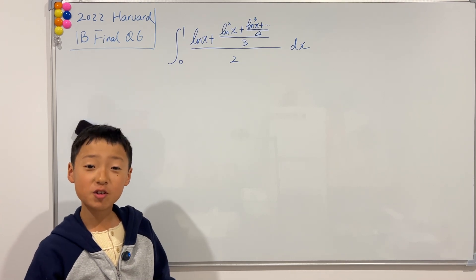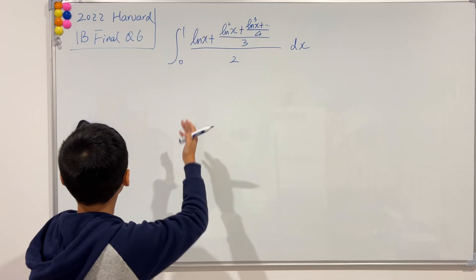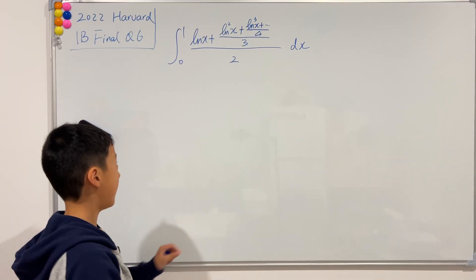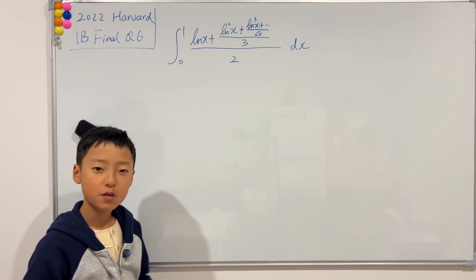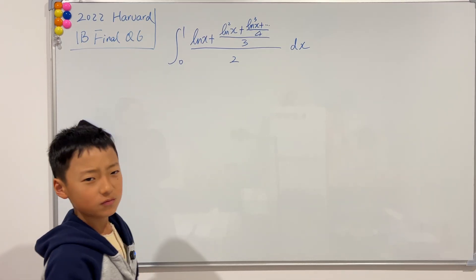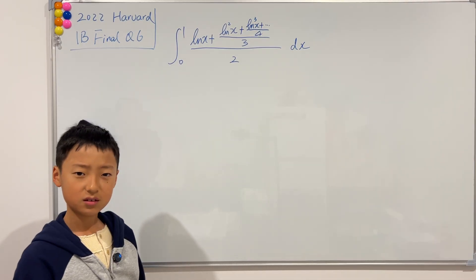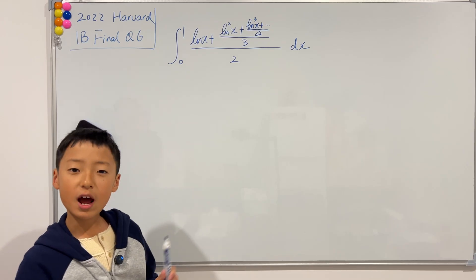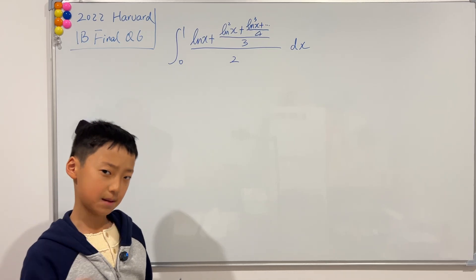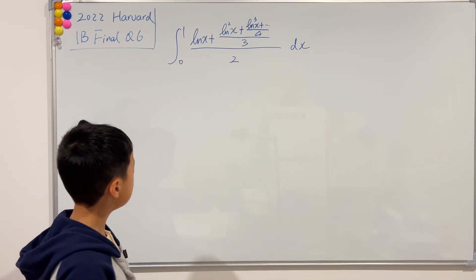Hi guys, welcome back to another video of me teaching. Today I have this integral from the 2022 Harvard integration B, question 6 finals. This integral does look very, very complicated, but we're actually going to use partial fractions to make it a bit simpler. So how do we use partial fractions here?